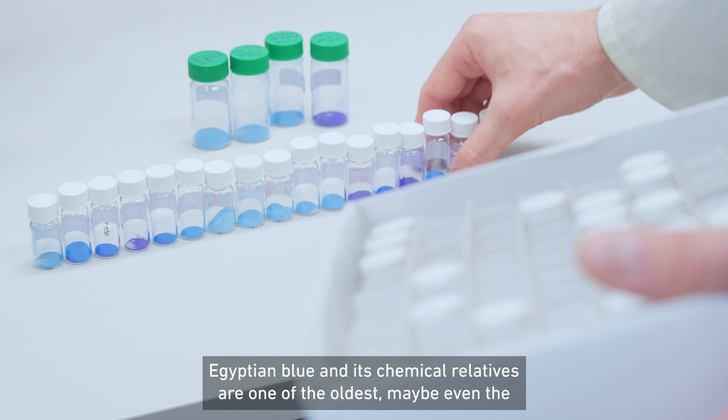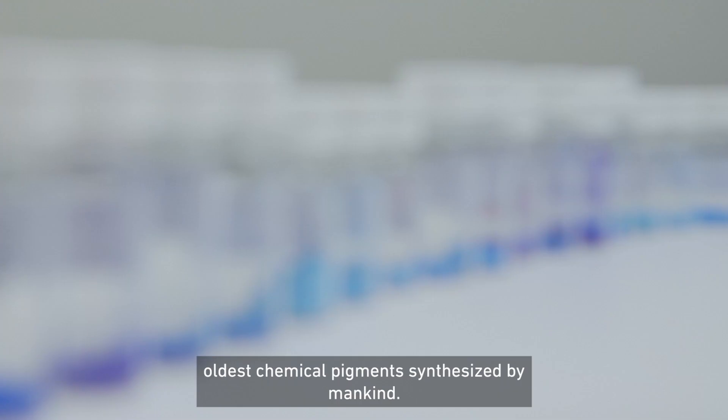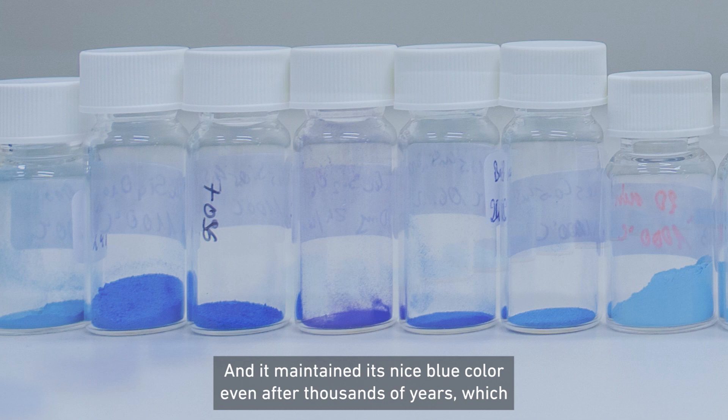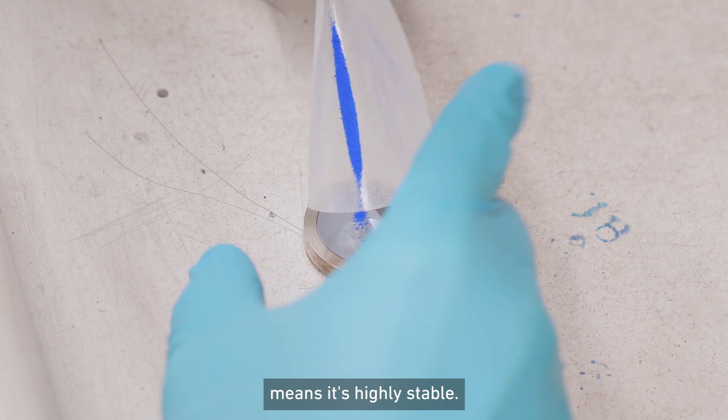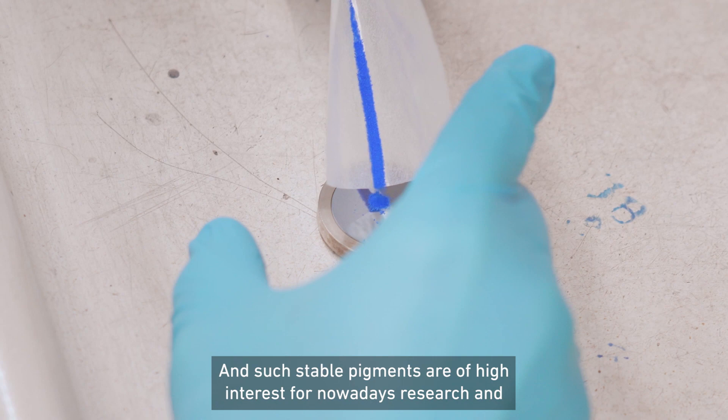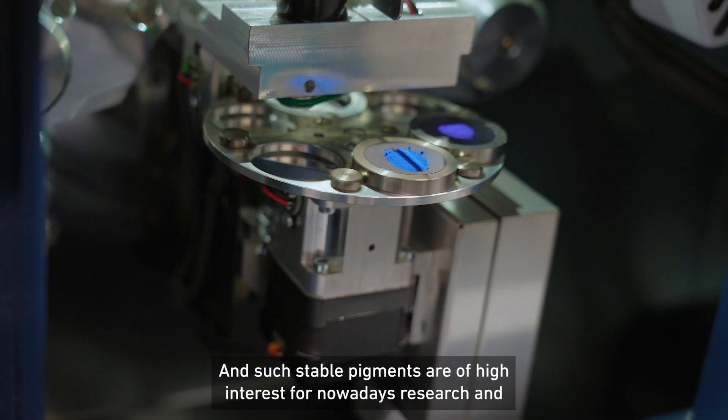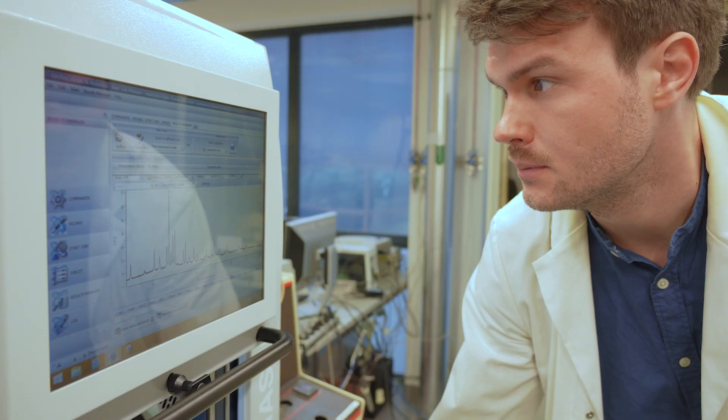Egyptian blue and its chemical relatives are one of the oldest, maybe even the oldest, chemical pigments synthesized by mankind. It maintained its nice blue color even after thousands of years, which means it's highly stable. Such stable pigments are of high interest for nowadays research and potentially even for biomedical applications.